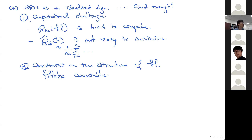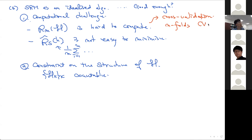Cross-validation and n-fold cross-validation will address the first issue — the computational challenge. For the other issues, we will look at something called a convex surrogate objective, and we will also look at how to rephrase model selection in terms of regularization, which allows uncountably many models.